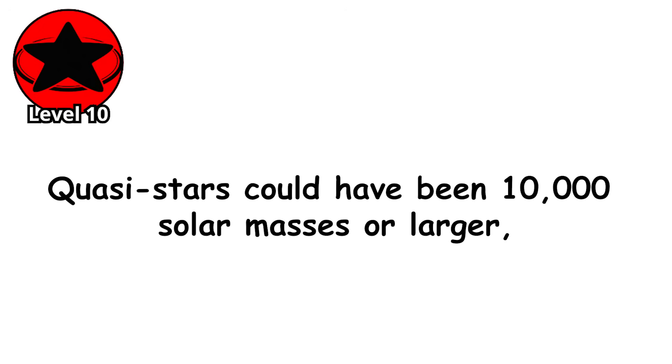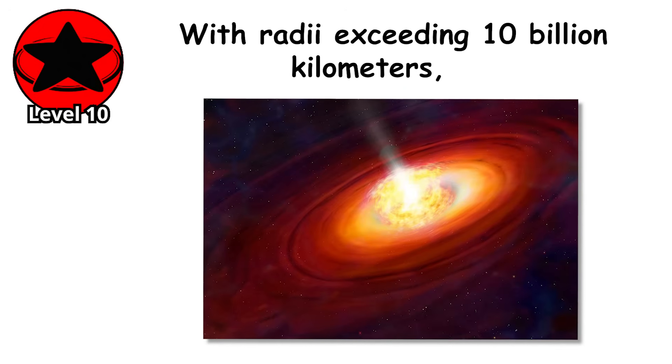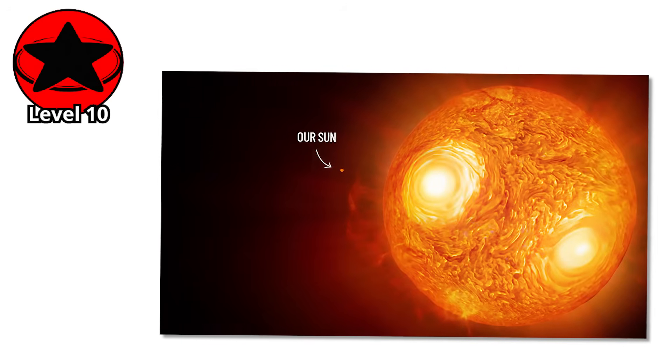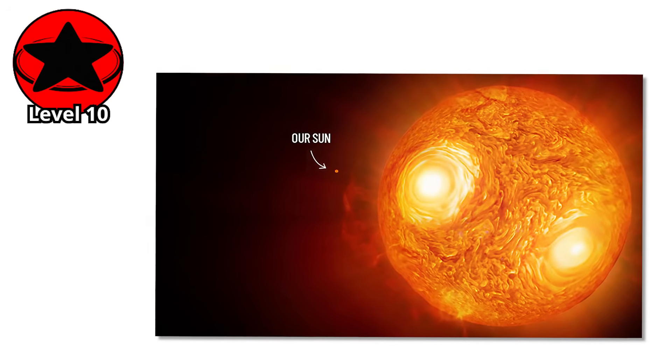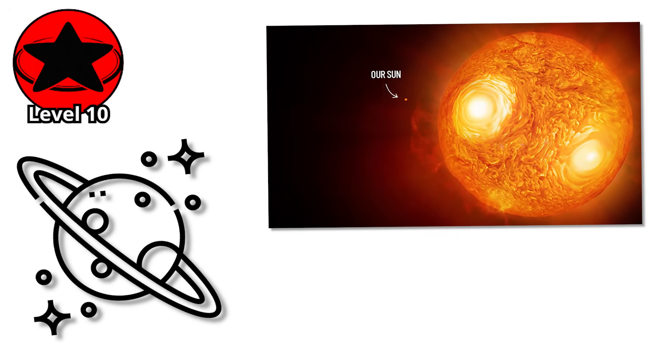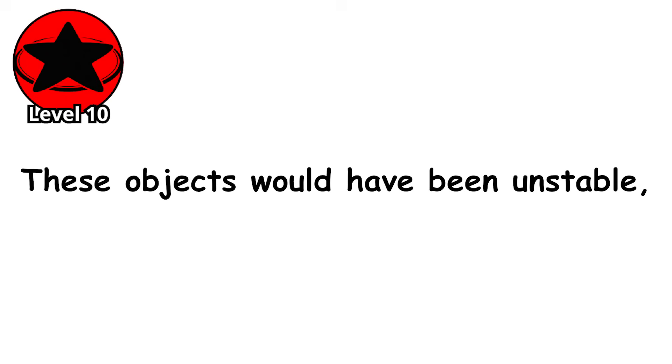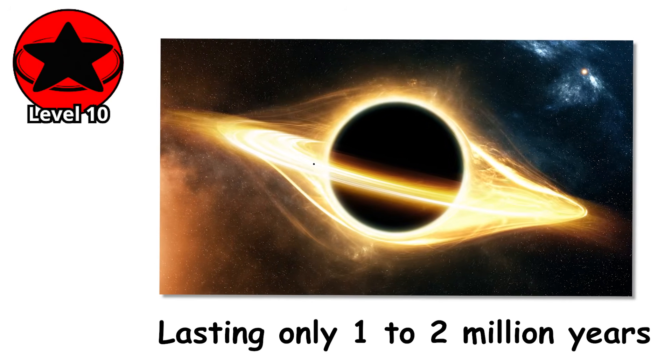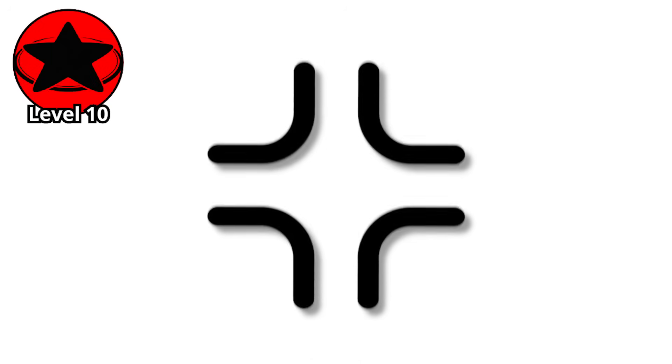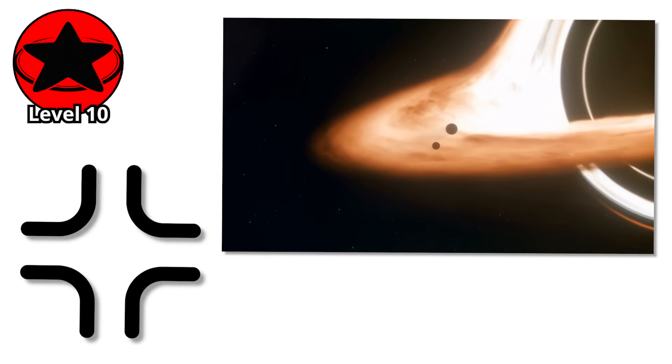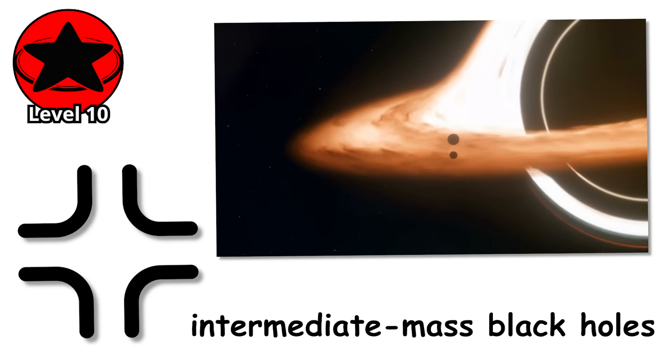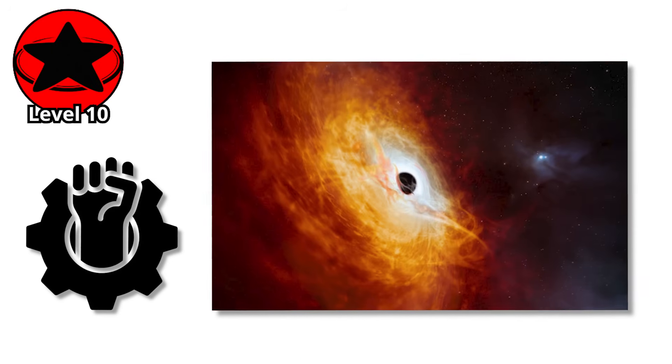Quasi-stars could have been 10,000 solar masses or larger, with radii exceeding 10 billion kilometers, large enough that their surface would extend beyond the orbit of Neptune. If you replaced our Sun with a quasi-star, its outer layers would swallow every planet in the solar system. These objects would have been unstable, lasting only one to two million years before the black hole consumed enough of the envelope to disrupt the balance. When they finally collapsed, they would have left behind intermediate mass black holes weighing thousands of solar masses, objects we still struggle to explain today.